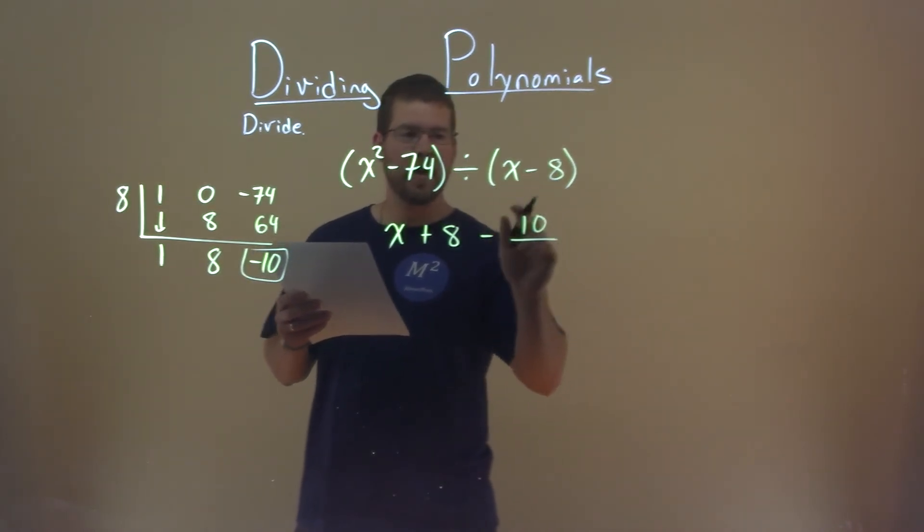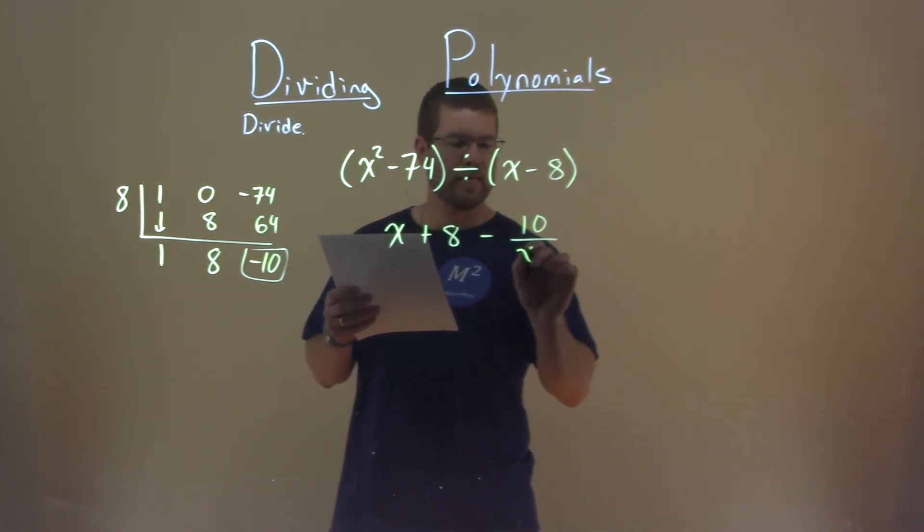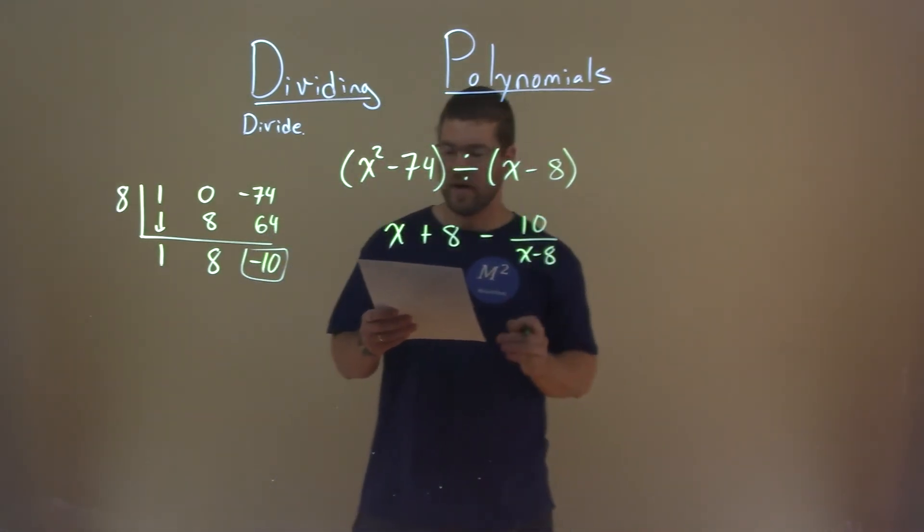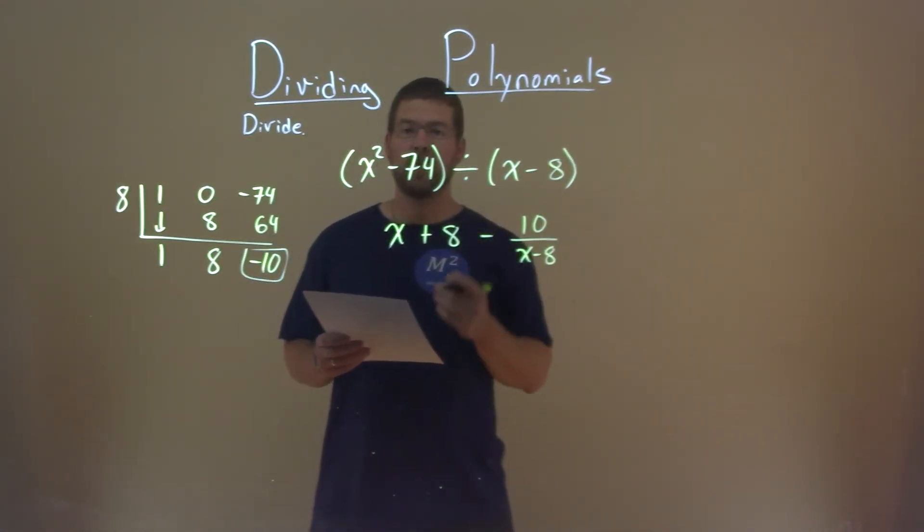over, or dividing it by, x minus 8. And so, x plus 8 minus 10 divided by x minus 8 is our final answer.